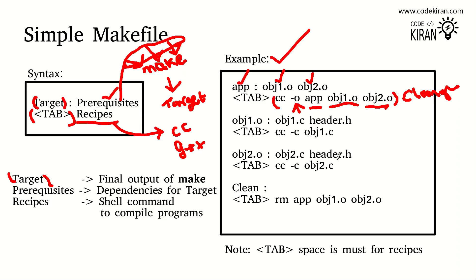'cc' here refers to gcc — the GNU Compiler Collection. Object1.o and object2.o are sub-targets. We also define rules for how to generate these sub-targets. The target name is object1.o with dependencies object1.c and header.h. In order to generate object1.o you need the source file object1.c and the header file header.h. Make will keep track of all timestamps in your build directory — timestamps of object files, C files, and header files.